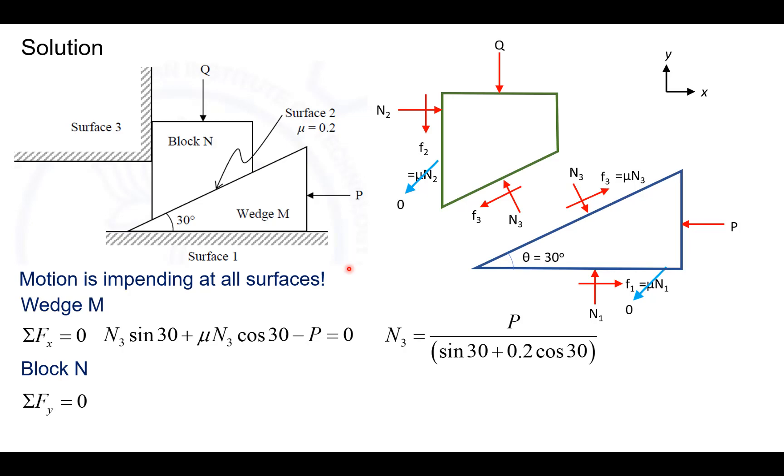Next, let us consider the free body diagram of block N and let us write the equilibrium equation sigma Fy equaling 0 from which we can see N3 cos 30 minus mu N3 sin 30 minus Q equals 0. And we can solve for Q from this equation which comes out to be N3 into cos 30 minus mu sin 30.